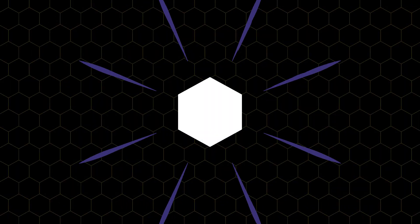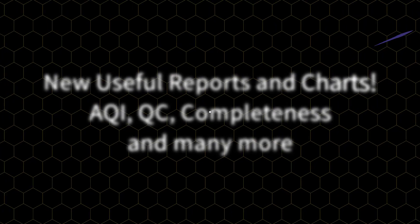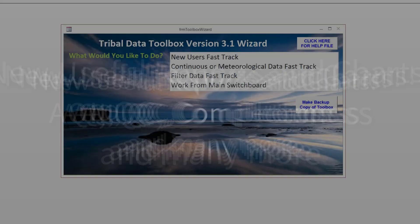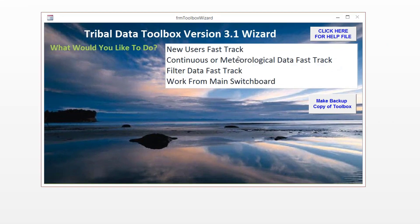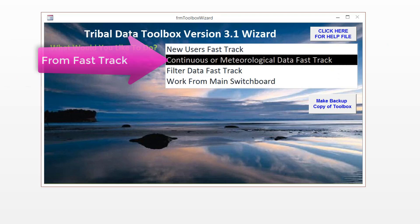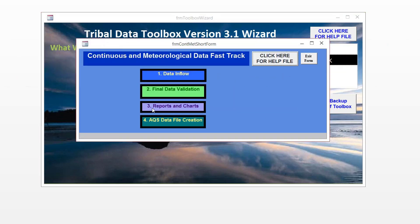Reports and charts are my favorite part of the toolbox, and I think they're really exciting and fun. We're going to show you how to generate a whole bunch of different kinds of reports, and start using the reports and charts option of the toolbox. You go to continuous or meteorological data fast track, and it's the third button on the form.